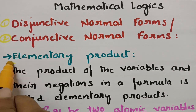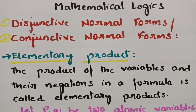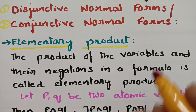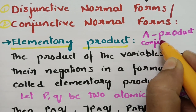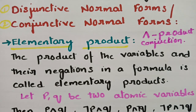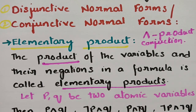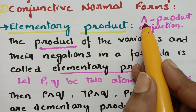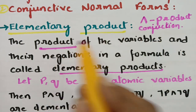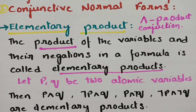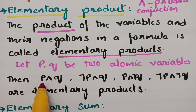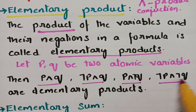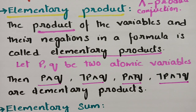Before that we have to learn what elementary products are. The product symbol — otherwise known as conjunction — is represented by the cap symbol (∧). The product of variables and their negations in a formula is called an elementary product. For example, if p and q are two atomic variables, then p∧q, ¬p∧q, p∧¬q, and ¬p∧¬q are all elementary products.